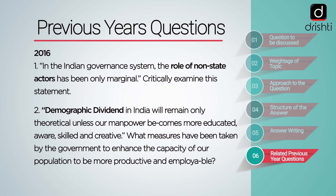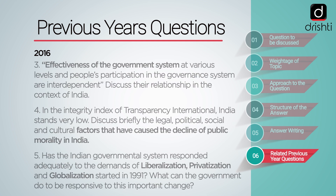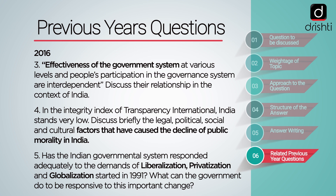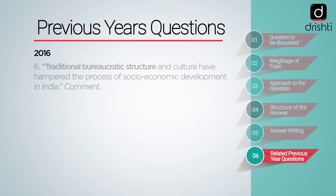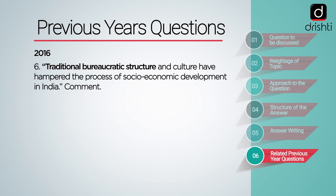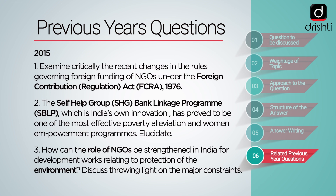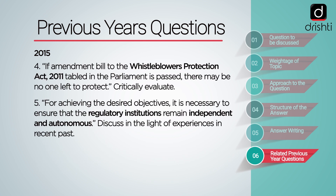In 2016, the questions asked were related to the role of non-state actors in governance, demographic dividend, effectiveness of government systems, and the interdependence of people participation. Other questions were related to factors that have caused the decline of public morality in India, responsiveness to liberalization, privatization, and globalization, as well as the traditional bureaucratic structure and its impact on development. In 2015, six questions were asked related to the Foreign Contribution Regulation Act (FCRA) 1976, self-help group bank linkage program, role of NGOs for development works, whistleblowers protection act, and the independence and autonomy of regulatory institutions.